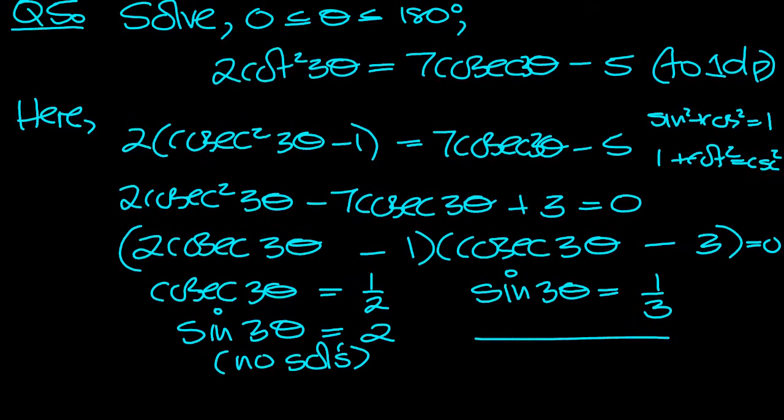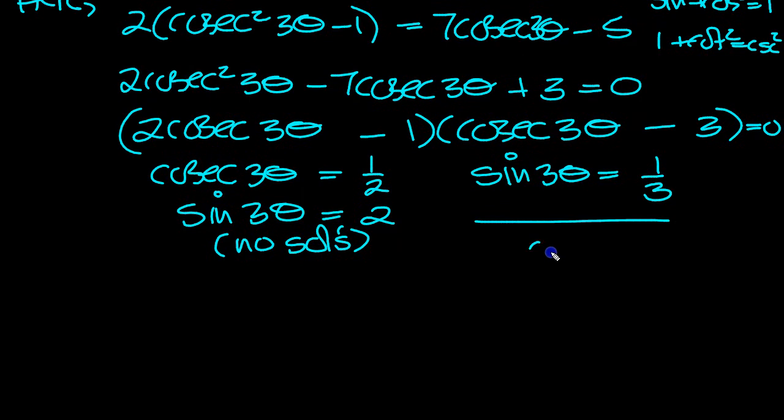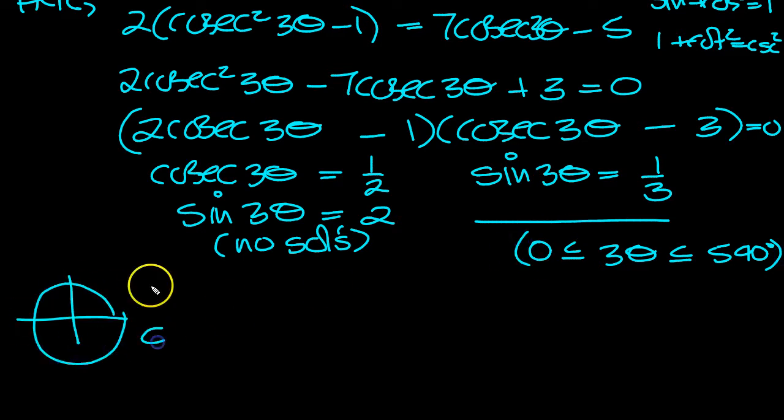We need to solve for theta from 0 to 180, so 3 theta times by 3 all the way through, and we get 0 to 540 degrees. So let's have a solution range. Let's draw a circle, write CAST, and we're going round once to 360 and then round to 540.